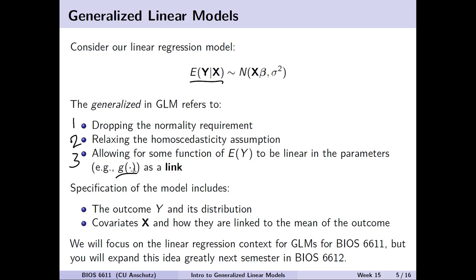When working with a generalized linear model, the specification includes a few things. One is the outcome y and the distribution we want to assume — for example, is it a binary variable, a count variable, or some other distribution? We also include the covariates x as usual, but we have to specify how we're linking them to the mean of the outcome. In 6612 next semester, you'll greatly expand this to other types of models and approaches for repeated measures and correlated data.